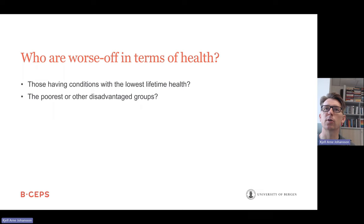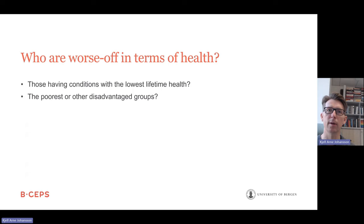Another way to measure worst-off is to use a bivariate measure, meaning that we rank-order interventions according to income level, education level, or area of residence. We look at inequalities in baseline health and see how much the poor benefit versus the rich, or the highly educated versus the lowly educated. So there is one univariate way and one bivariate way to identify and measure the worst-off.